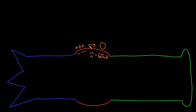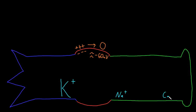The resting potential of neurons is related to concentration differences — also called gradients — of many ions across the cell membrane. A few of these ions are the most important for neuron function. The key cations are potassium (K+), sodium (Na+), and calcium (Ca2+) — each calcium ion has two positive charges. The most important anions are chloride (Cl-) and multiple organic anions, which I'll write as OA-.